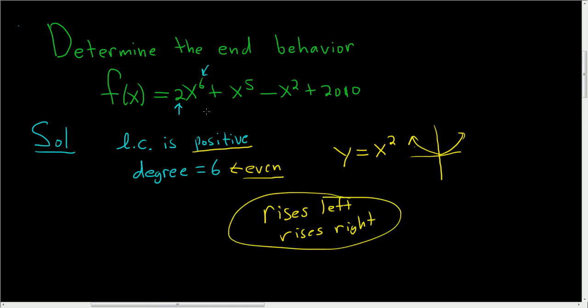So if you just look at the leading coefficient and whether the degree is even or odd, and then you think of a simple function, the end behavior of your polynomial will be the same as the end behavior of your simple function. I hope that made sense.